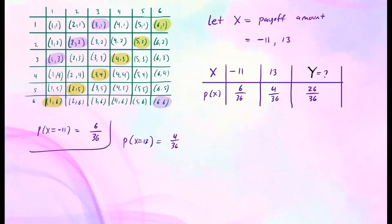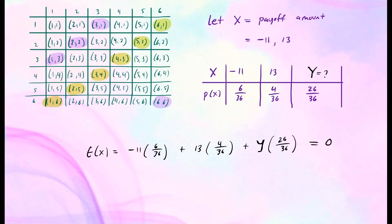So we know by definition that expected value of a random variable x is simply, we take negative 11 times 6 over 36, you can simplify the fractions if you like, then 13 times 4 over 36. And of course y, I don't know how much that is, I'm figuring it out, that's 26 over 36. And we want this to equal zero. So we can solve for this variable y.